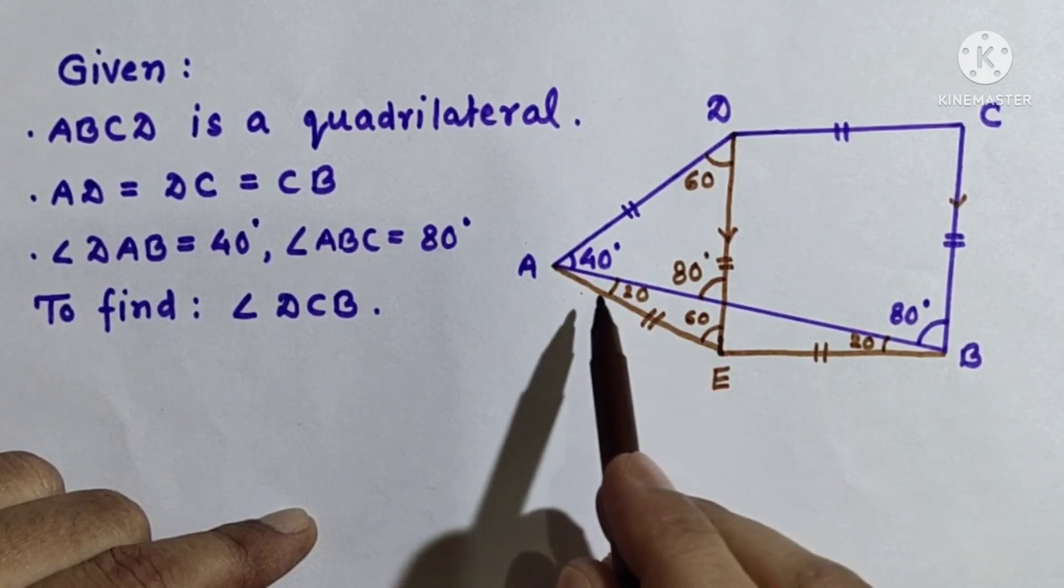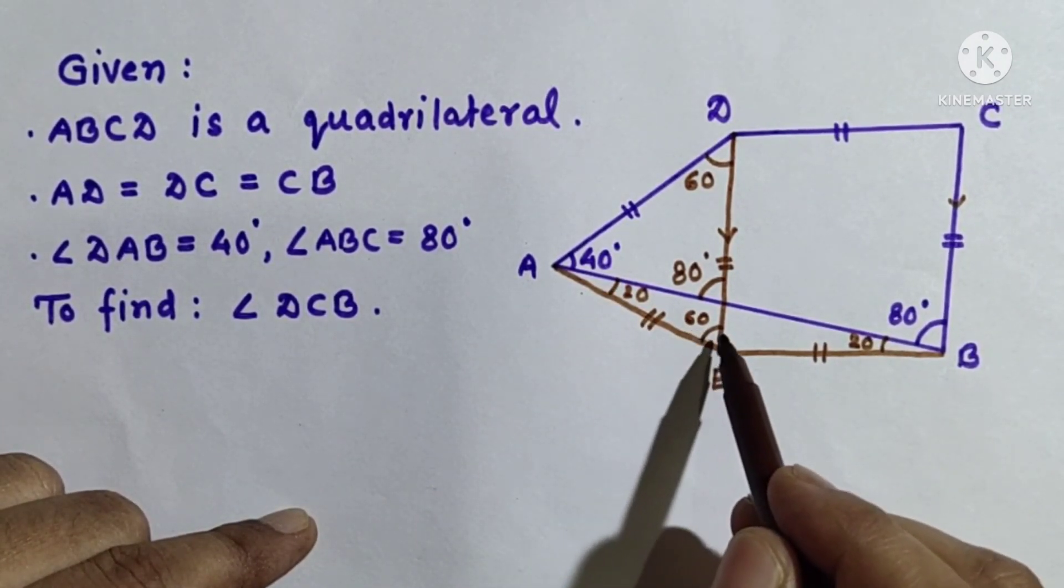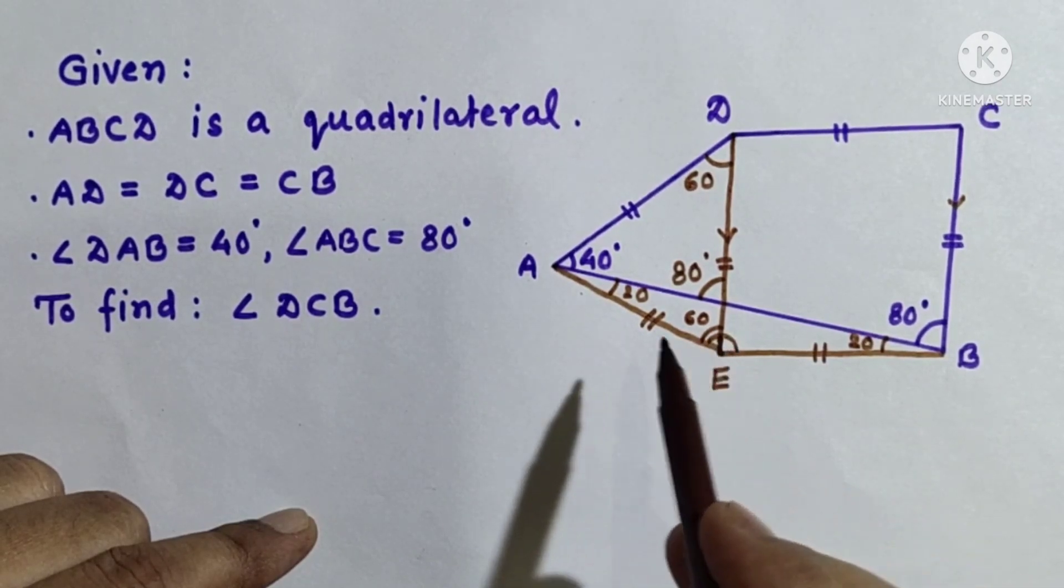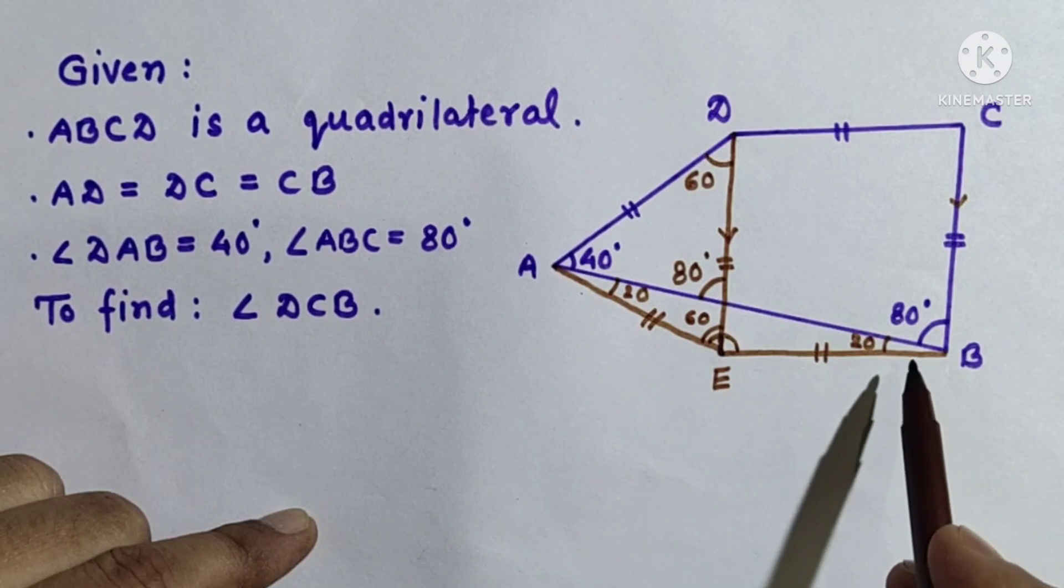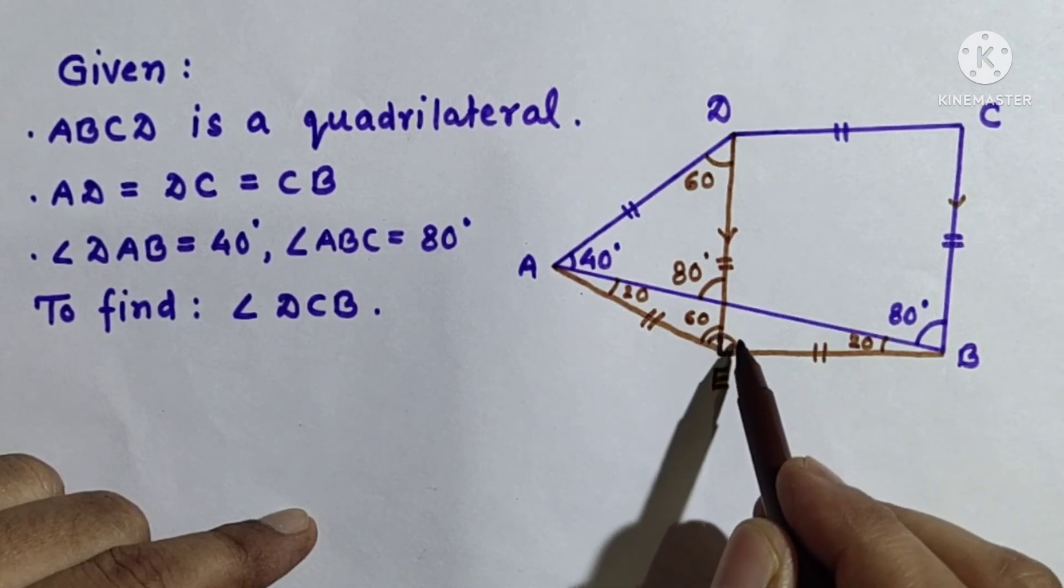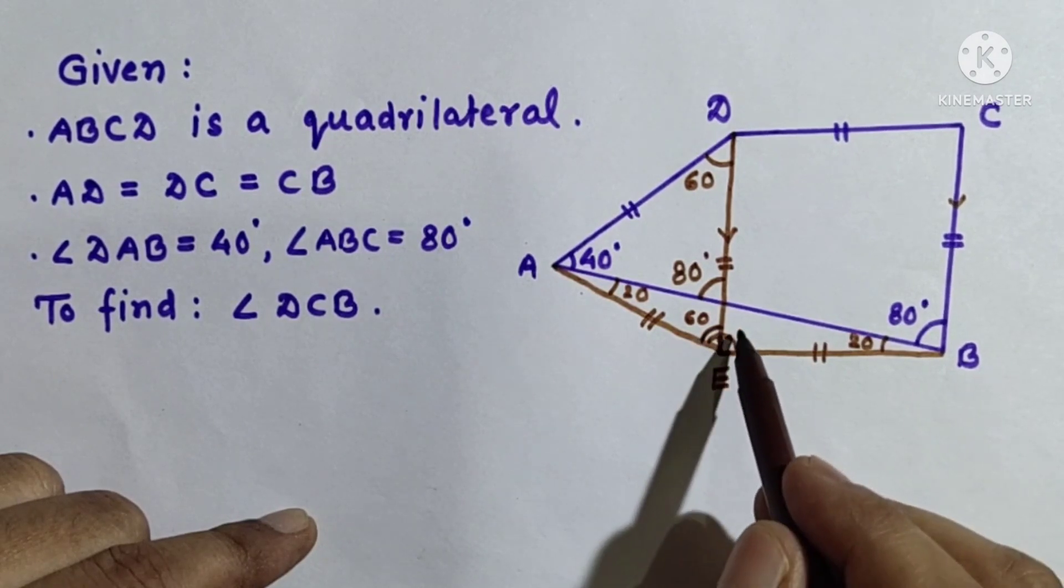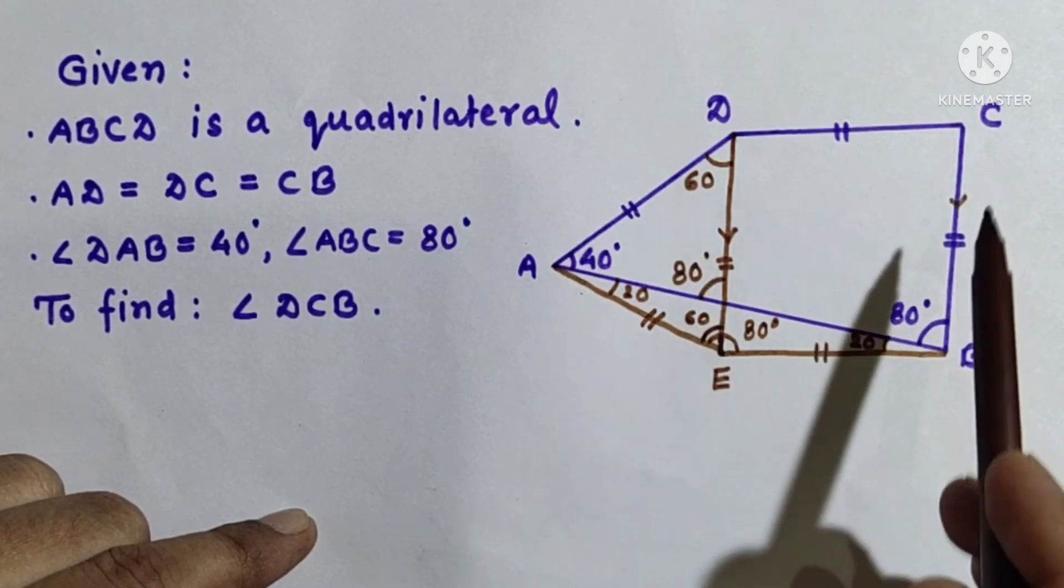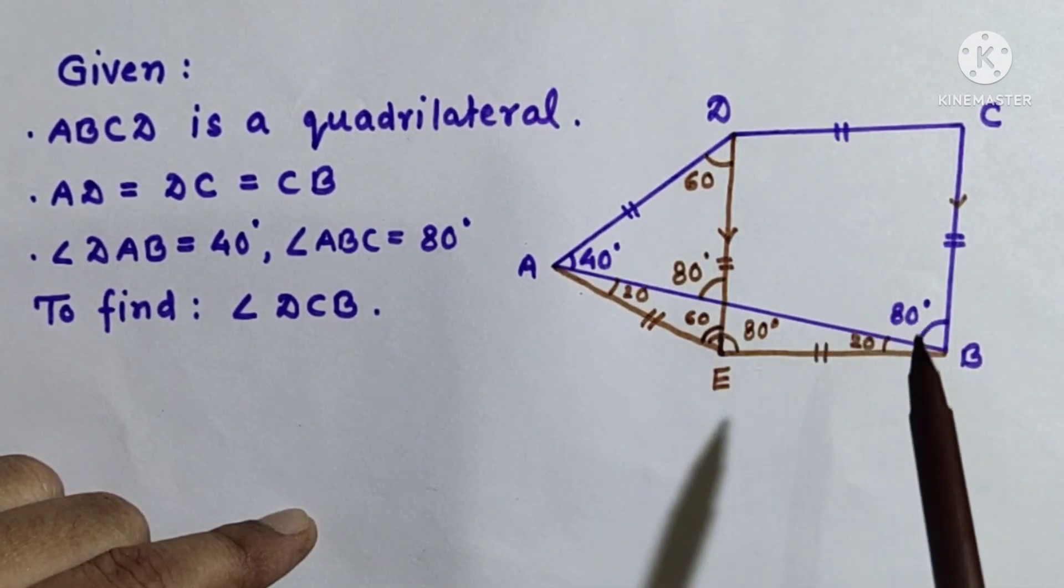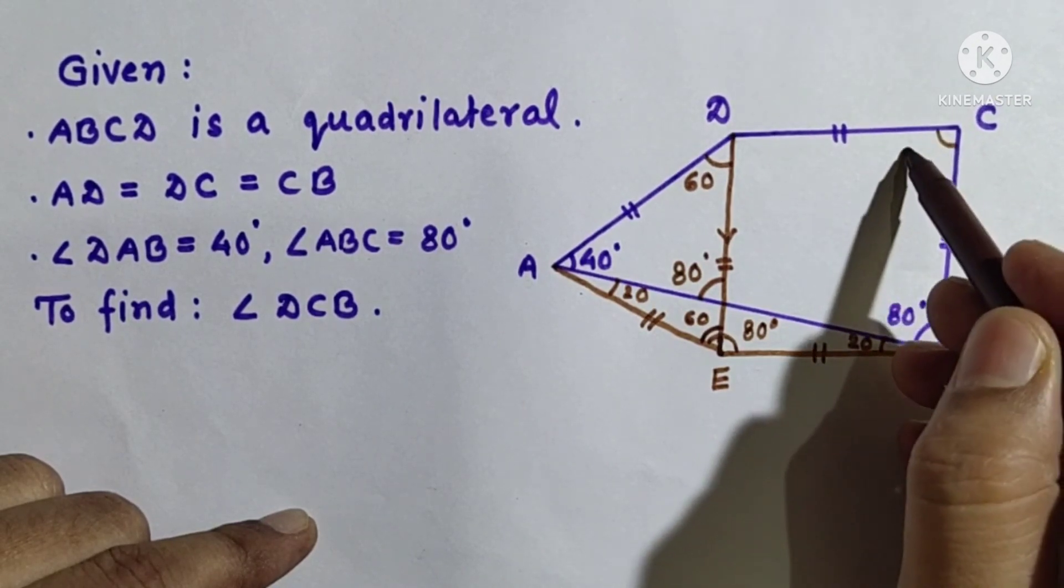This is 20, this is 20, and then this whole angle will be 180 minus sum of 20 and 20. So 180 minus 40 is 140. This whole angle is 140 and this is 60 degree, so this will be 80 degree. Since opposite angles of a parallelogram are equal, this will also be 80 degree.